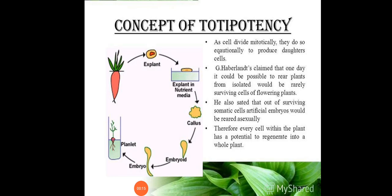Totipotency is the ability of a cell to generate a new plant or new organism. In the plant, all nucleated body cells have the potentiality to give rise to a whole plant. The ability of a cell or mass of cells to give rise to a whole plant is called totipotency or cellular totipotency.